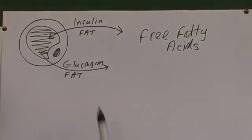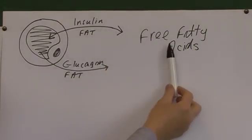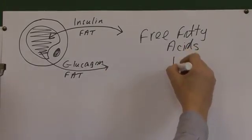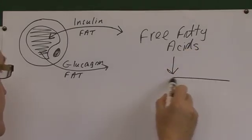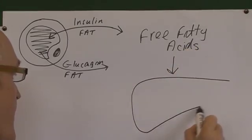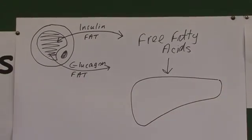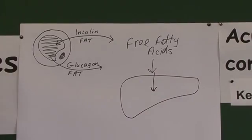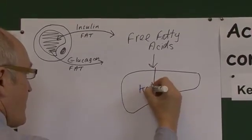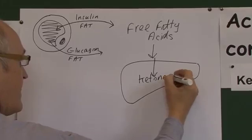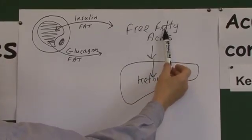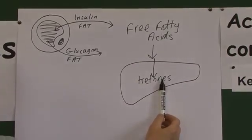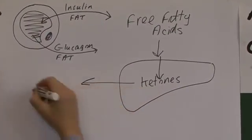So when someone's hypo-insulinemic, there's going to be free fatty acids going into the blood. And these free fatty acids circulate around to the liver. And in the liver, the free fatty acids are converted to ketones. So the more free fatty acids there are in the blood, the more ketones the liver will produce.